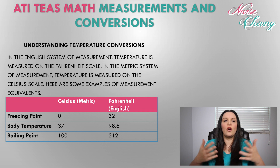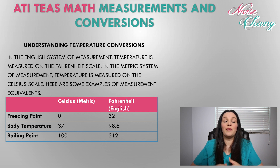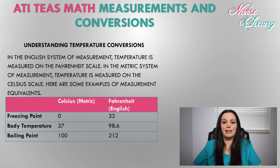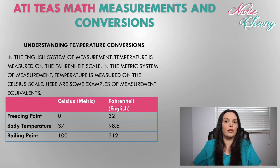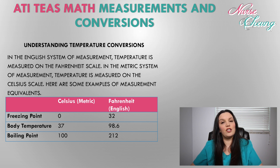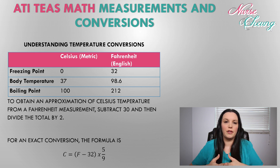Just like with basic units of measure, temperature is also seen differently in the metric and English systems. In the English system, temperature is measured on the Fahrenheit scale; in the metric system, it's measured on the Celsius scale. For the ATITs: freezing point is 0°C versus 32°F, body temperature is 37°C versus 98.6°F, and boiling point is 100°C versus 212°F.